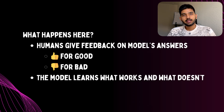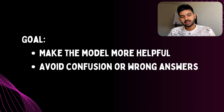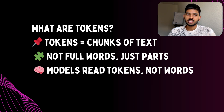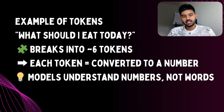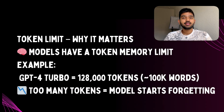The final step is reinforcement learning. Here we let humans rate the model's answers — whether they are good or bad, correct or wrong. This teaches the model which responses are good and which ones are not, and over time it becomes more helpful and less confusing. Now let's talk about tokens — this is a super important part to understand. Tokens are like chunks of text; the model doesn't read full words, it breaks the text into smaller pieces called tokens. For example, the sentence 'What should I eat today?' might become around six tokens, and each token gets converted into a number that the model can understand, because the model only understands numbers.